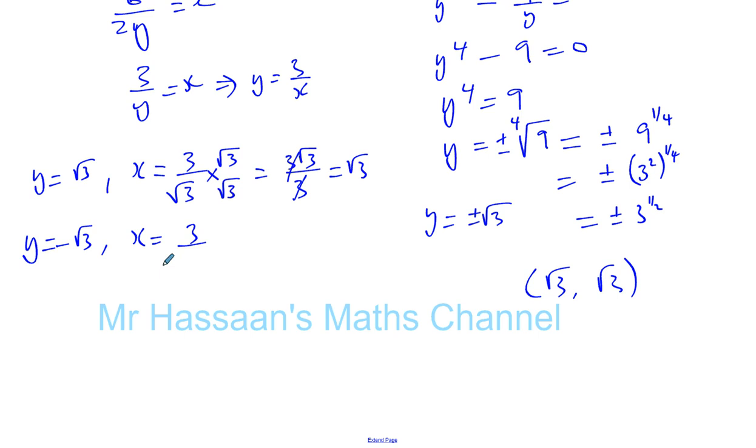So it's a very similar thing. You have 3 over negative root 3, multiply by root 3 both top and bottom. You're left with 3 root 3 over negative 3. So the other point is when x is negative root 3, y is negative root 3.